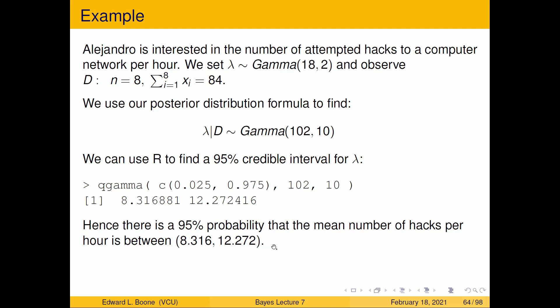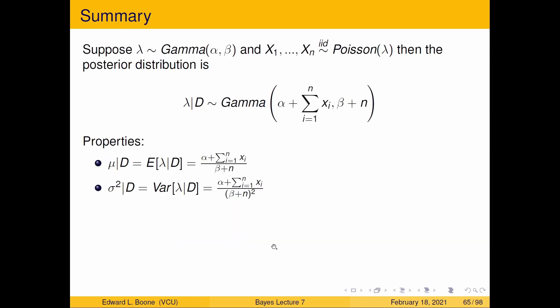This gives the interval 8.316 to 12.272, so there is a 95% probability that the mean number of hacks per hour is between 8.316 and 12.272. We can also compute the posterior mean and variance directly using the alpha-over-beta formula. We've now taken our data and prior information, turned them into a posterior, and made inferences. In the next video we'll cover prediction and other issues related to prior distributions.